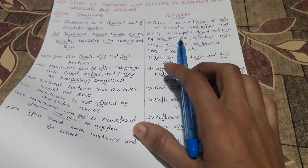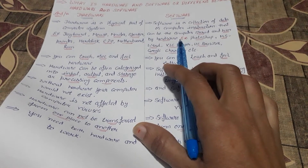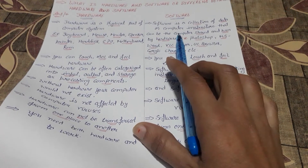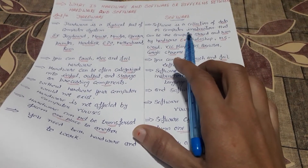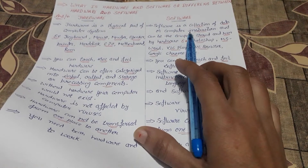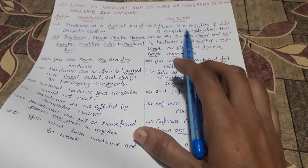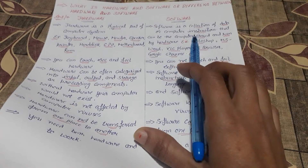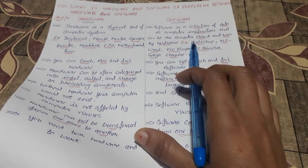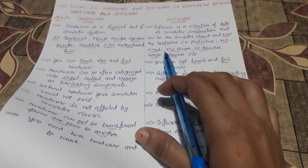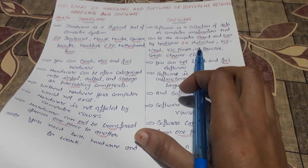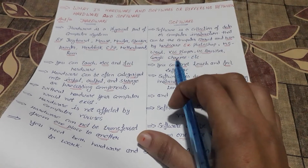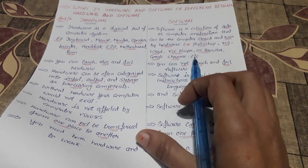Software is a collection of data and computer instructions that can be stored and run by hardware. It refers to the instructions and data we give to the computer. Examples include Photoshop, MS Word, VLC Player, UC Browser, Google Chrome, etc.